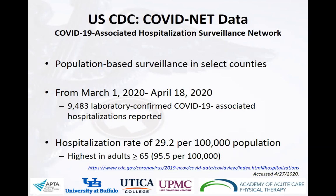The data are presented per 100,000 people. From March 14th through April 18th, there were 9,483 laboratory-confirmed cases of COVID-19-associated hospitalizations. The rate of hospitalization was reported at 29.2 per 100,000, with the highest rate being in adults 65 years of age and older.